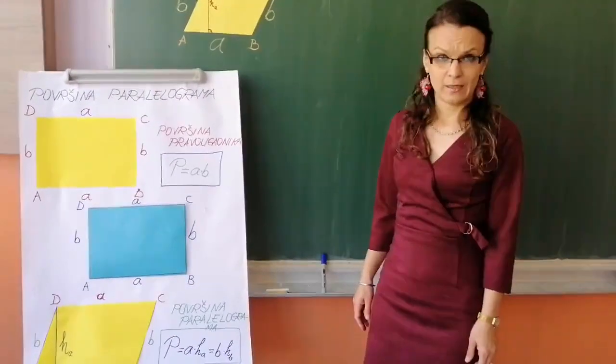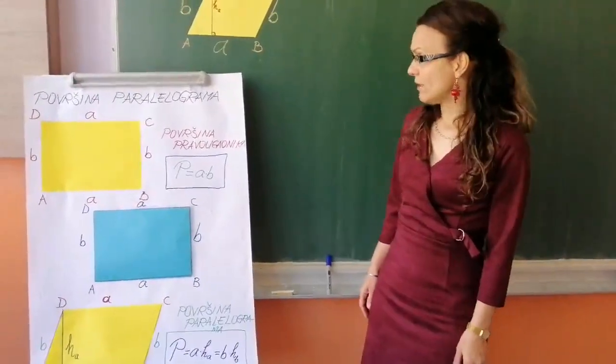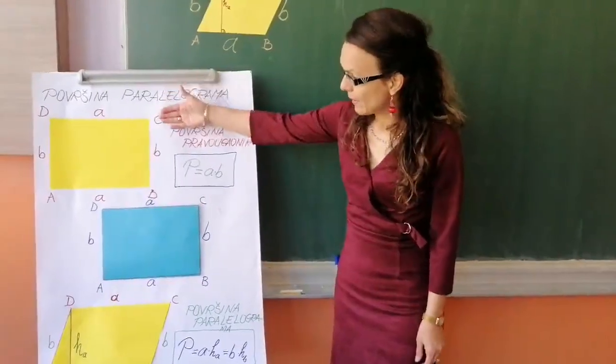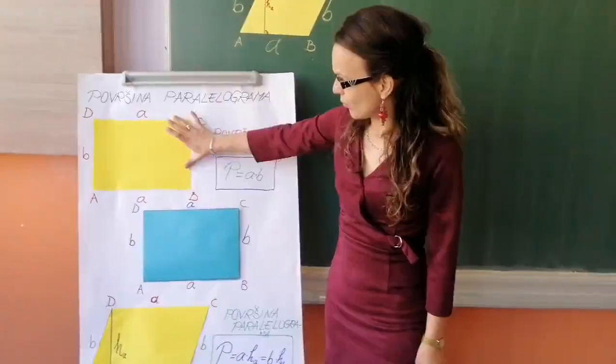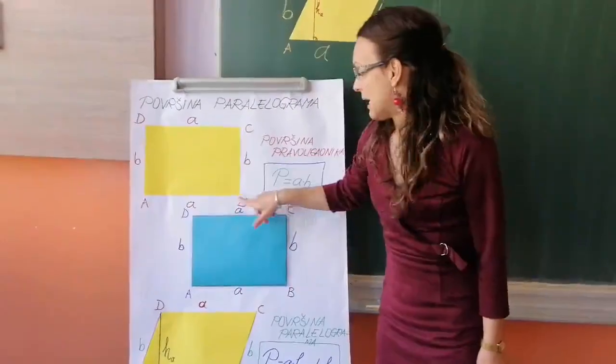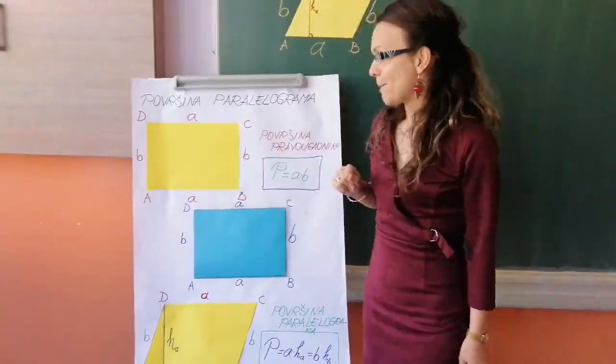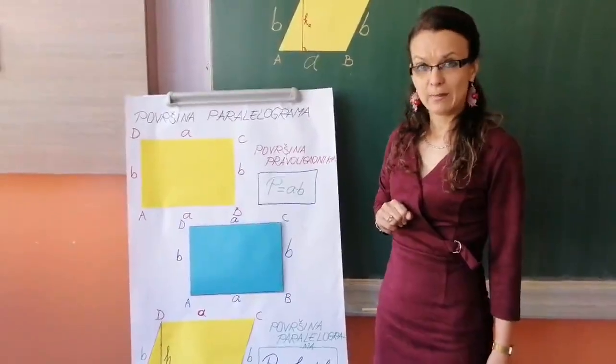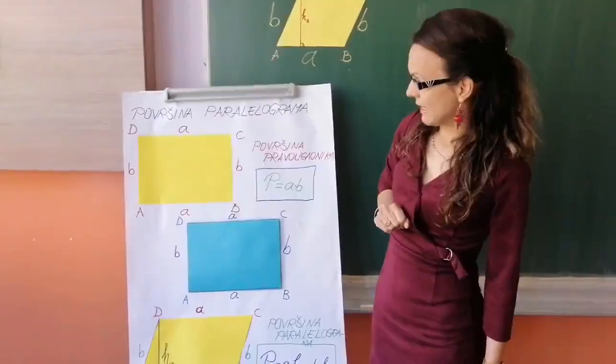Prije prošlog časa imali smo priliku upoznati kako se izračunava površina pravougaonika. I vidite, ovdje na slici ja sam žutom bojom prikazala jedan pravougaonik imenan A, B, C i D. Podsjetimo se, svaki pravougaonik sastoji se iz dva para naspramnih paralelnih stranica.